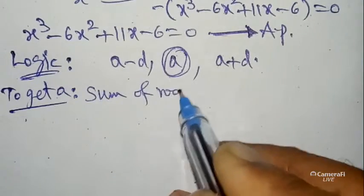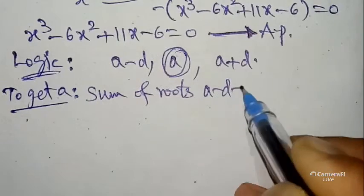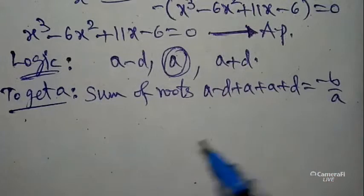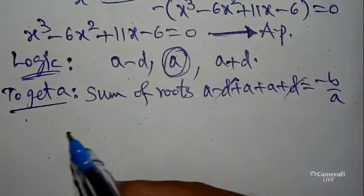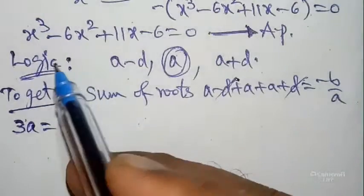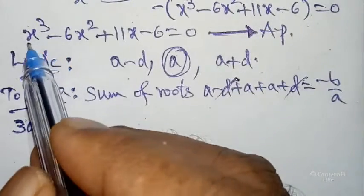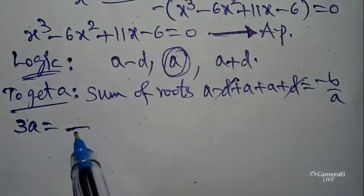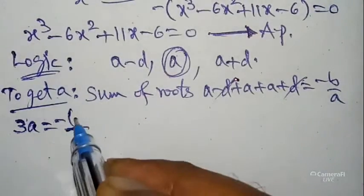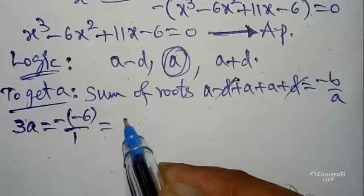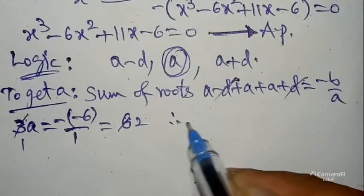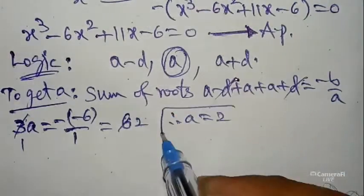To find 'a', use the sum of roots formula: (a minus d) plus a plus (a plus d) equals minus b by a. The plus d and minus d cancel, giving 3a equals minus b by a. Here the x³ coefficient is 1 and x² coefficient b is minus 6. So minus b equals plus 6, giving 3a equals 6 by 1 equals 6. Therefore a equals 2.